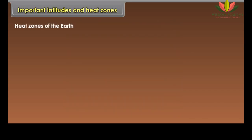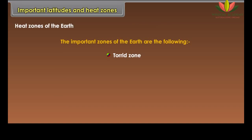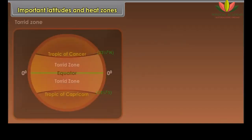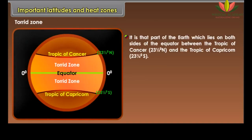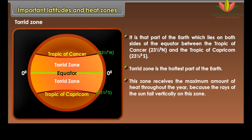Heat Zones of the Earth. The important zones of the earth are: Torrid Zone, Temperate Zone, and Frigid Zone. The Torrid Zone is that part of the earth which lies on both sides of the equator, between the Tropic of Cancer at 23 and a half degrees north and the Tropic of Capricorn at 23 and a half degrees south. The Torrid Zone is the hottest part of the earth. This zone receives the maximum amount of heat throughout the year because the rays of the sun fall vertically on this zone.